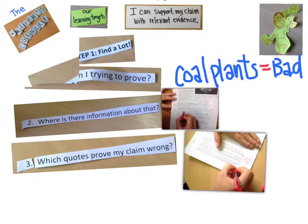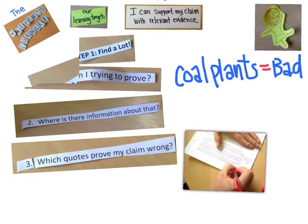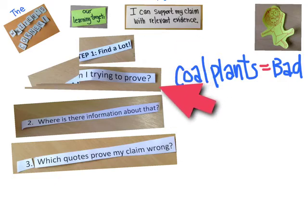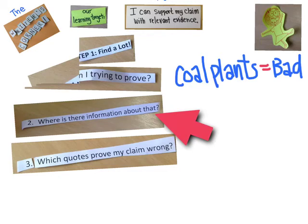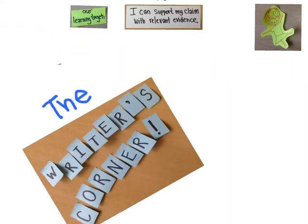Let's check in with Carol — Carol looks like she's starting to get it. To remind ourselves what we're doing: the first step when looking for evidence to support your claim is to find a lot of relevant evidence. While finding evidence, make sure you know what you're trying to prove — what is your claim. Then find out where there is information about that. Finally, mark any information that proves your claim wrong, so that later in your paper you can show your claim is correct and deal with any evidence that proves it wrong. That's all from the Writer's Corner.